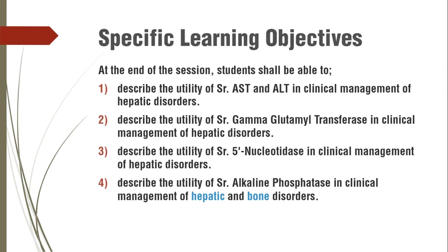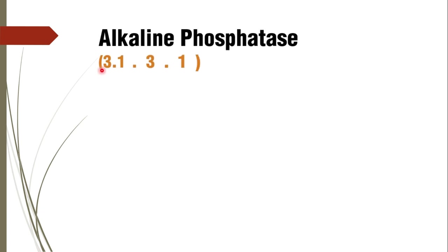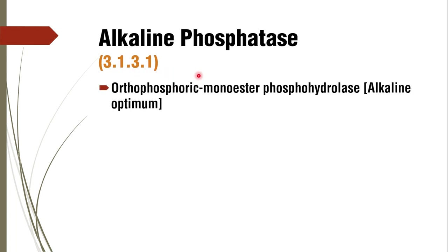Now coming to alkaline phosphatase. Its enzyme classification number is 3.1.3.1. It is orthophosphoric monoester phosphohydrolase. Its pH optimum is alkaline.